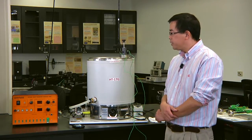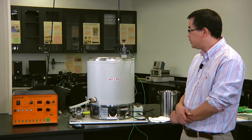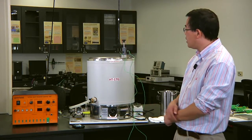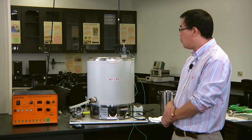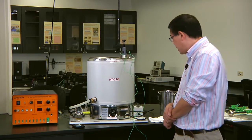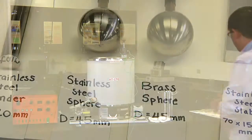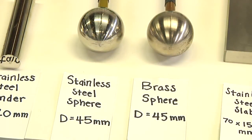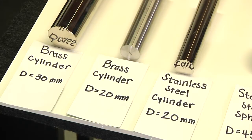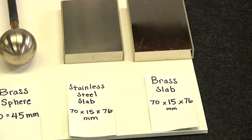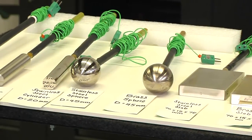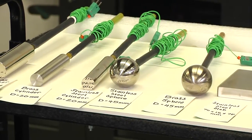In order to do this experiment, you need the following devices: the service unit, and a module called HT17G. You also need about seven samples to see how temperature changes with time for different materials and different shapes, which will give you different Biot numbers and different convection heat transfer coefficients.